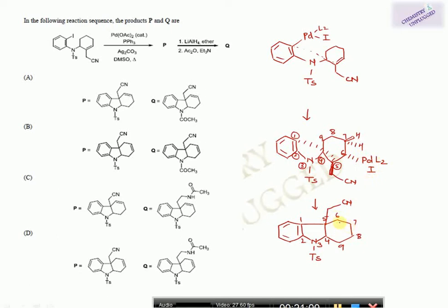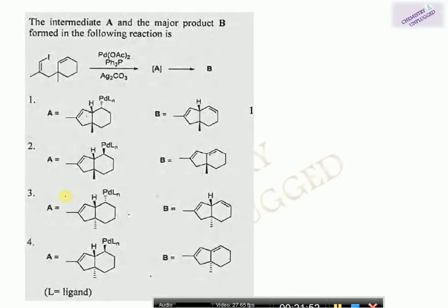This product P corresponds to option A and B (double bond at that carbon, CN attached). For product Q: the nitrile (CN) group is first reduced to an amine using lithium aluminum hydride, then this amine reacts with acetic anhydride and triethylamine. So the correct answer for product Q is option C.